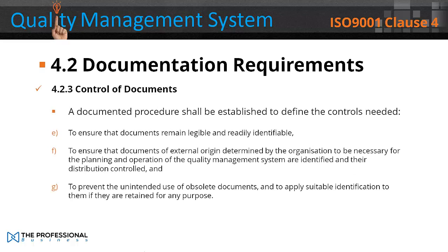e) To ensure that documents remain legible and readily identifiable; f) To ensure that documents of external origin determined by the organisation to be necessary for the planning and operation of the quality management system are identified and their distribution controlled; and g) To prevent the unintended use of obsolete documents and to apply suitable identification to them if they are retained for any purpose.